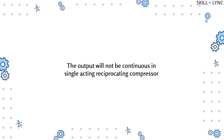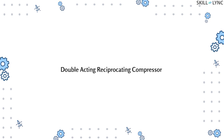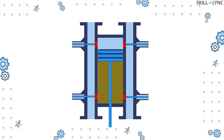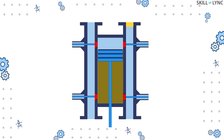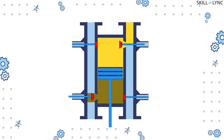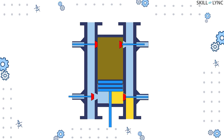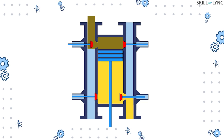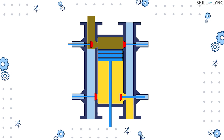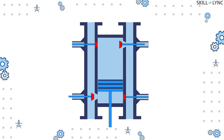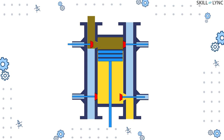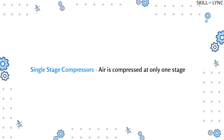That's all about the single acting reciprocating compressor. However, this type of compressor provides output only during the upward movement of the piston. For obtaining continuous output, double acting reciprocating compressors are used. In this type, suction and delivery valves are provided at either side of the cylinder. When the piston moves down, air is sucked in at the upper side and compressed at the lower side. Similarly, as the piston moves up, air gets compressed at the top side and sucked from the atmosphere at the bottom side, compressing air continuously with output for each stroke.